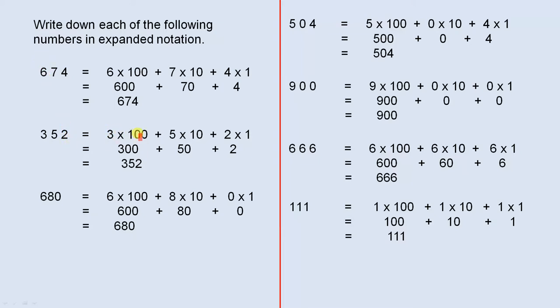352 is 3 times 100 plus 5 times 10 plus 2 times 1. 300 plus 50 plus 2 is 352. 680 is 6 times 100 plus 8 times 10 plus 0 times 1. 600 plus 80 plus 0 is 680.